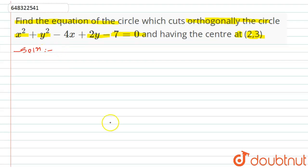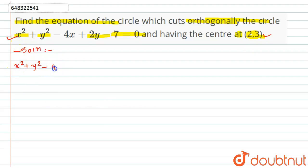In this question we have to find the equation of the circle which cuts orthogonally the given circle and has center (2, 3) — a very straightforward type of question. First of all, we will find the center of the given circle x² + y² - 4x + 2y - 7 = 0. Let's call its center c1, given by (-g', -f').